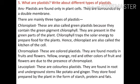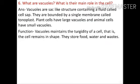Type two: chromoplasts — colored plastids found mostly in fruits and flowers; the yellow, orange, red, and other colors of fruits and flowers are due to chromoplasts. Type three: leucoplasts — colorless plastids found in roots and underground stems like potato and ginger; they store food prepared by the plant in the form of starch, protein, and fats.